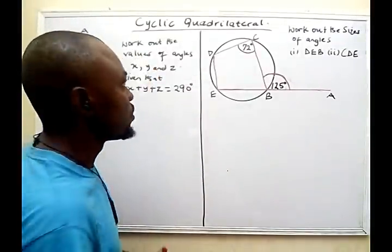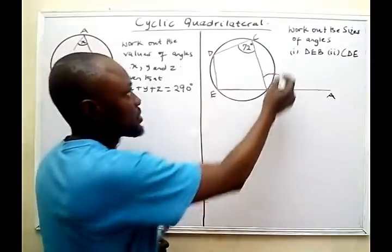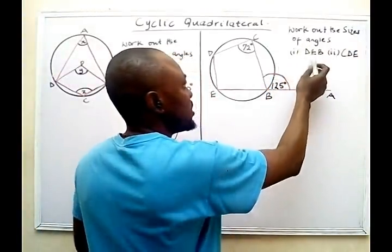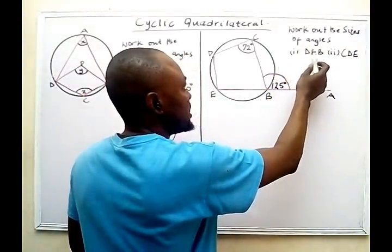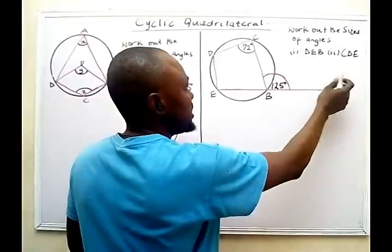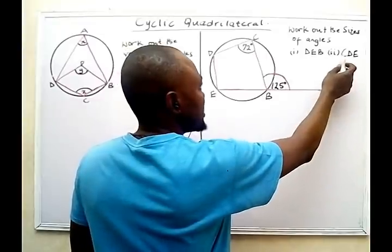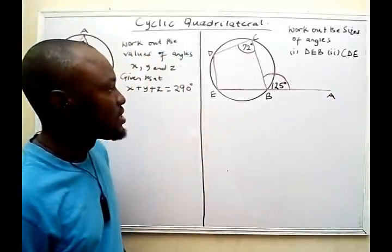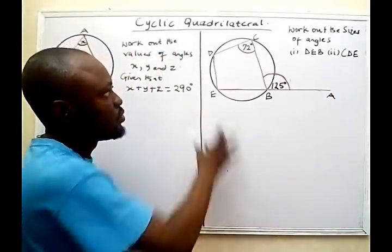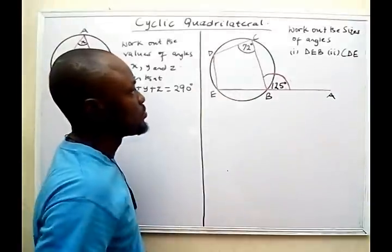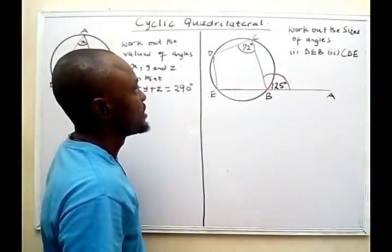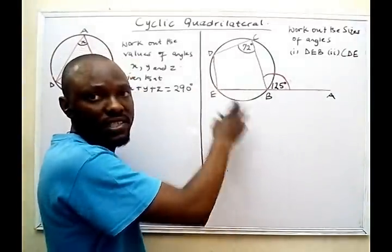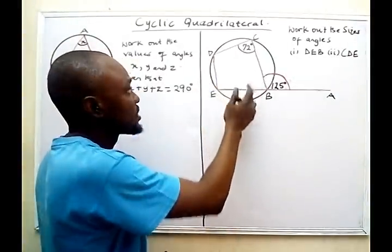The question says: work out the sizes of angles D, E, B, and C. Now the first thing to note is that this shape is a cyclic quadrilateral.